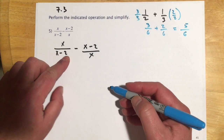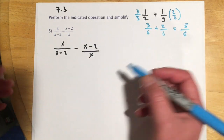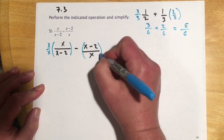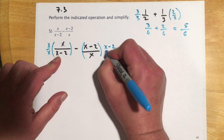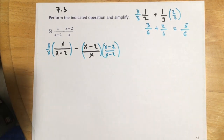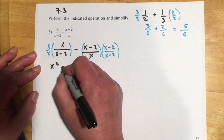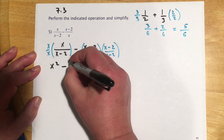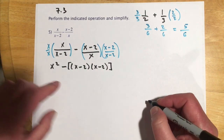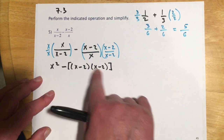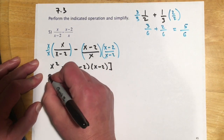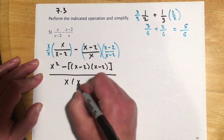Here the denominators are (x-2) and x — they're different, so we multiply them together for the LCD. We multiply the first fraction by x/x and the second by (x-2)/(x-2). Using brackets is a good idea because we'll be FOILing and then subtracting all the terms — it's easy to miss distributing the negative sign. The denominator becomes x(x-2).